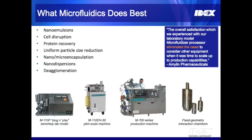This slide shows what Microfluidics does best. We create nano emulsions. We do cell disruption for biotechnology with very high protein recovery. We're very efficient at particle size reduction and encapsulation. This technology is also used for nano dispersions and deagglomeration applications. At the bottom you can see a variety of microfluidizer machines as well as the core technology, the fixed geometry interaction chamber.